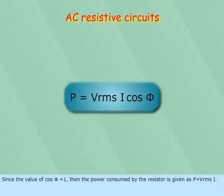Since the value of cos phi equals 1, then the power consumed by the resistor is given as P equals V_RMS I.